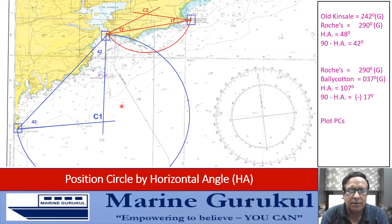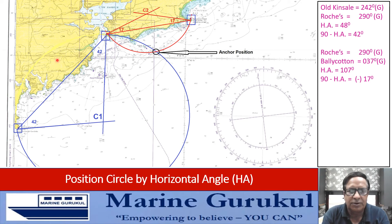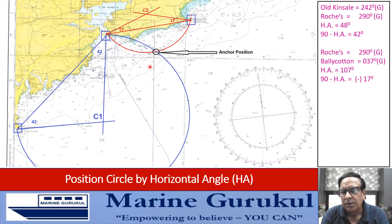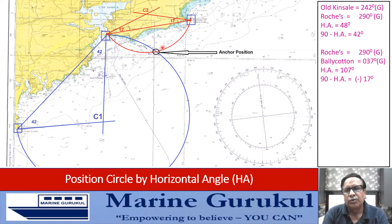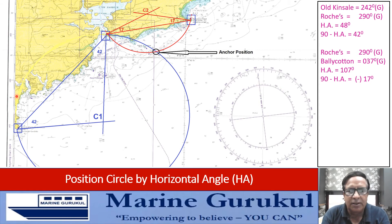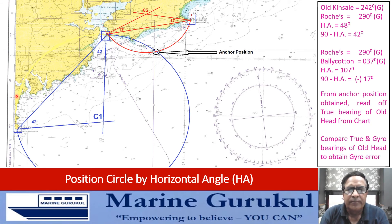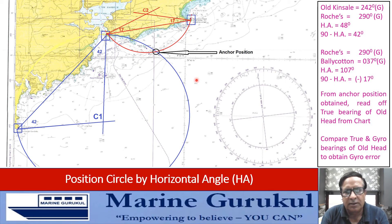The blue arc is one position circle and the red arc is the second. Where they intersect is the anchor position of the vessel. To find the gyro error, read off the true bearing of any one object from the chart — preferably the farthest object so that error is not amplified. Read the true bearing of Old Head of Kinsale from the anchor position using parallel rulers and the compass rose, then compare it with the gyro bearing of 242° to obtain the gyro error.